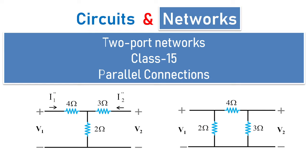Hello everyone, welcome to another session of Circuits and Networks. In today's class 15, under two-port networks, we'll see parameters on parallel connection — how to obtain any parameter, that is impedance parameters, admittance parameters, or any other parameters. When circuits are connected in parallel, we especially deal with admittance parameters because they are most suitable for parallel connections.